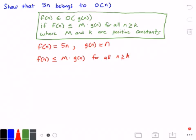All right, so if I rewrite this and plug in now for f of n and g of n, we're going to plug in 5 times n and n. So we rewrite this, we get 5 times n is less than or equal to M times n for all values of n greater than or equal to k.